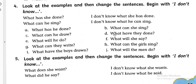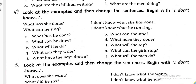The answer to question D is: 'I don't know what they have done.' For question number I: 'What have the boys drawn?' The answer is: 'I don't know what the boys have drawn.' Like this, you have to practice question number four as well. I think it's very easy.